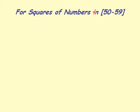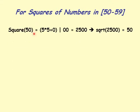Now we consider squares of numbers in the range 50 through 59. We know that square of 50 is 2500, using 5 times (5+0) on the left and 0 squared giving two zeros on the right. So square root of 2500 is 50.